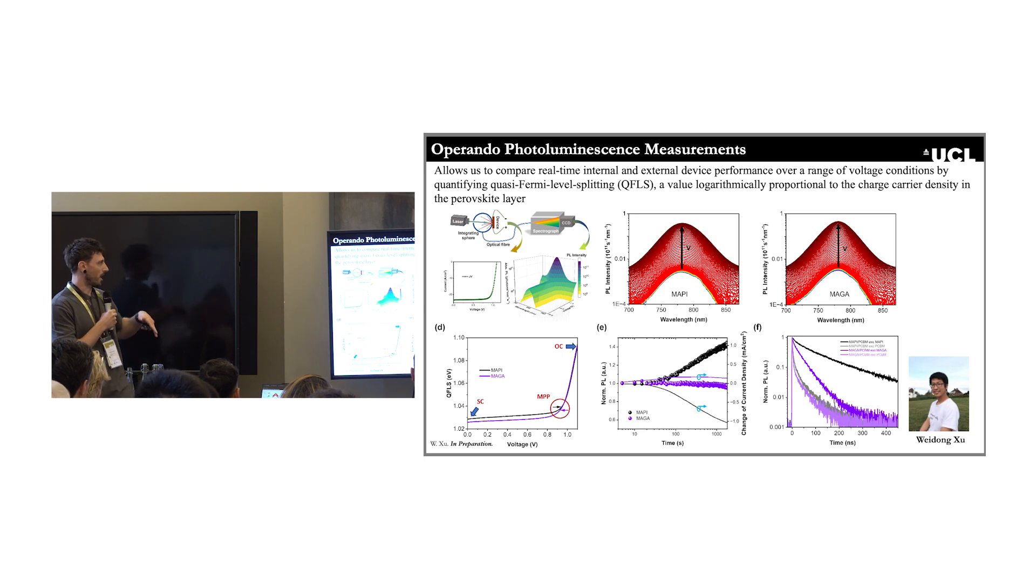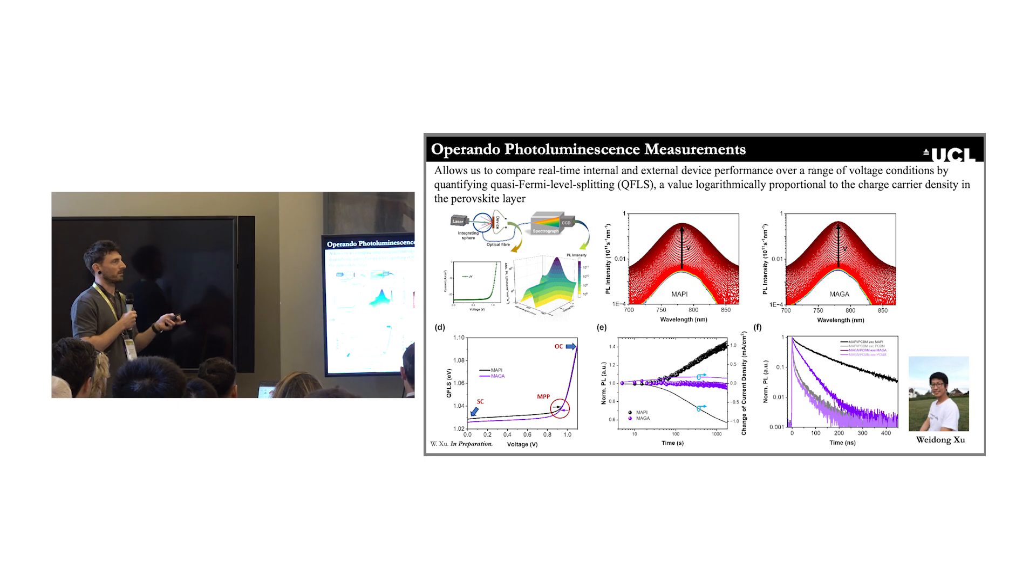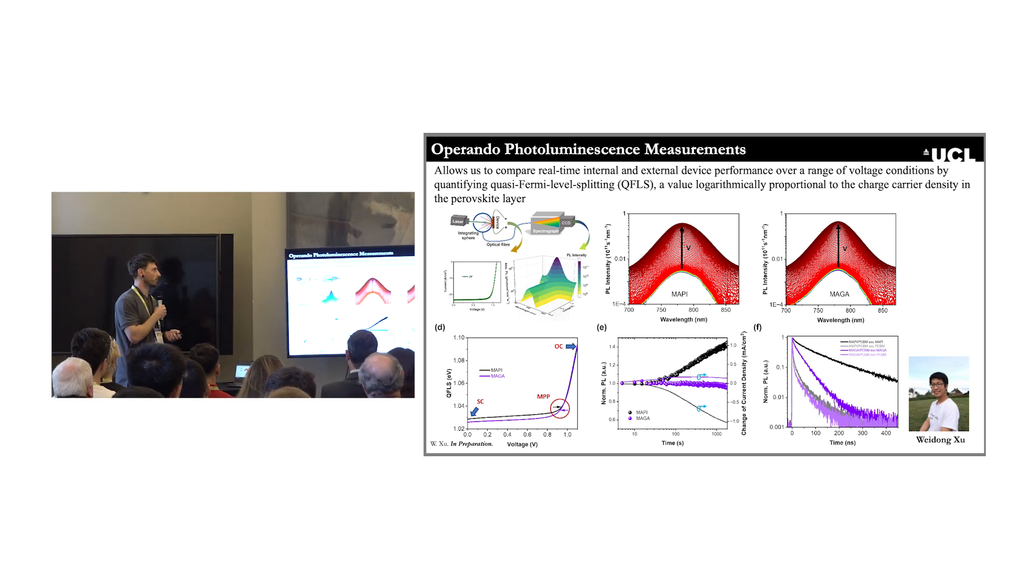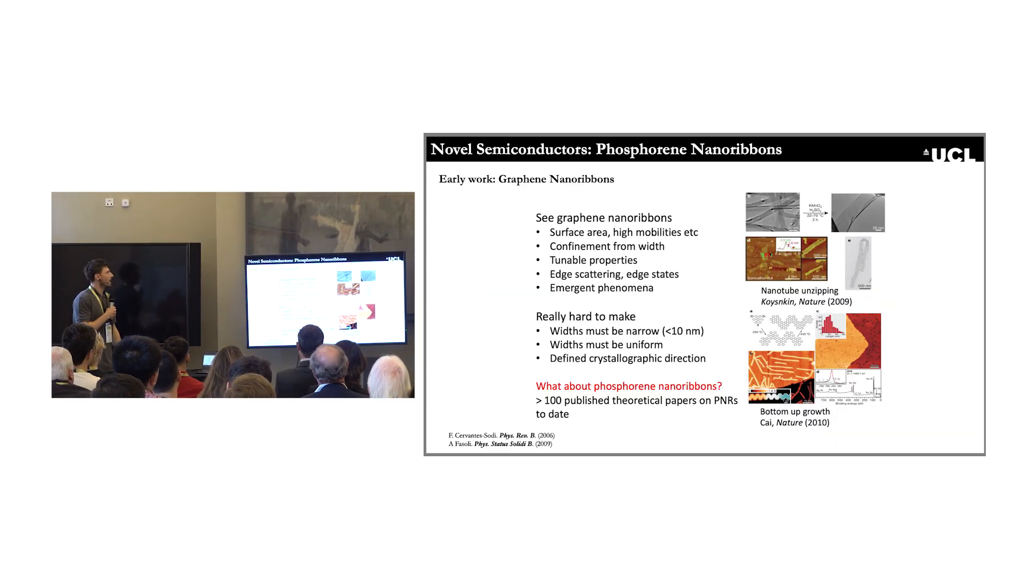The nice thing here is that we can then remap our JV curve from our photoluminescence spectroscopy. You can see here in the bottom left, a JV curve is a typical way that you would characterize your solar cell. You would sweep a voltage, measure a current, and you can remap that just from the PL spectra. This is sort of what we're working towards. We're hoping to publish this quite soon, but it's really about the fundamentals and understanding what's happened to the charge carrier density and how we can make it more efficient.